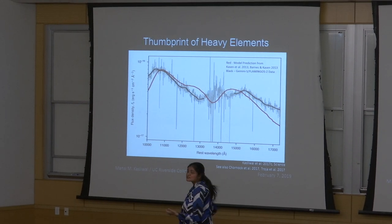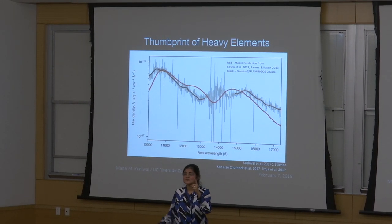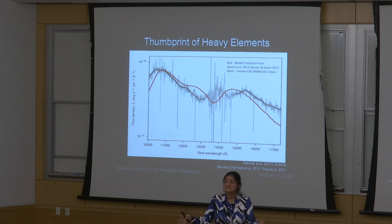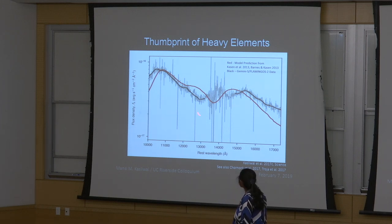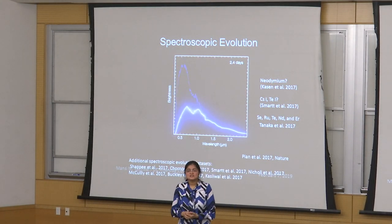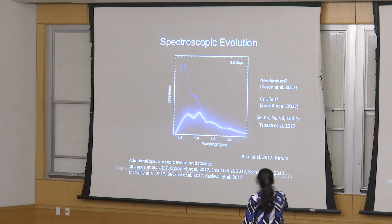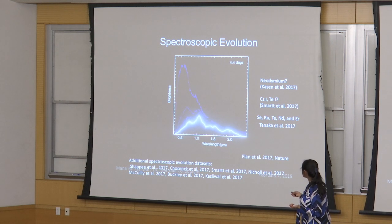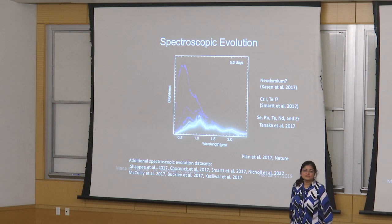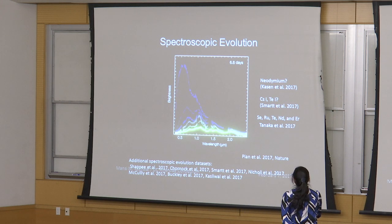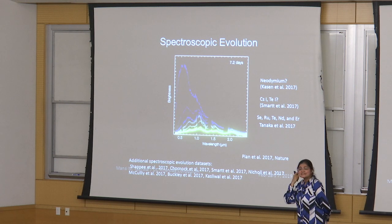These very broad features arise because many rows of the periodic table are being synthesized simultaneously — many lines and transitions all blended together at high velocity. Each bump is not attributable to one element but to a combination of many. With a series of spectra from the ESO VLT X-Shooter instrument, you can see that what started as a very bright blue flash became a very long-lived infrared event. Dan Kasen suggested that without neodymium you can't explain the bumps; Stephen Smartt suggested cesium and tellurium; a Japanese group had five other elements.